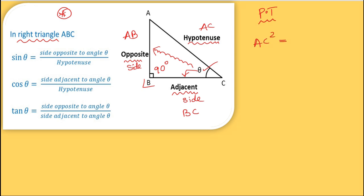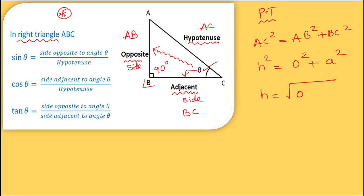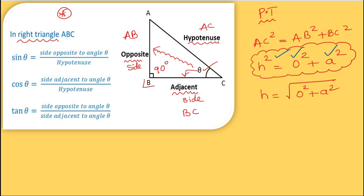By Pythagoras theorem: AC² = AB² + BC², i.e., hypotenuse² = opposite² + adjacent². So hypotenuse = √(opposite² + adjacent²). Given any two sides, you can find the third side using this theorem.